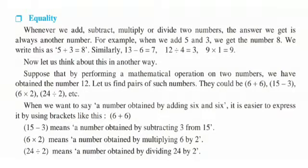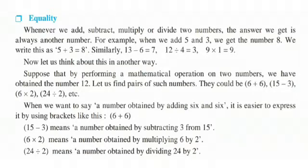the answer we get is always another number. It means by using one operation — such as addition, subtraction, multiplication, or division — with two numbers, we will get another number. For example, when we add 5 and 3, we get the number 8. We write this as 5 plus 3 equals 8.